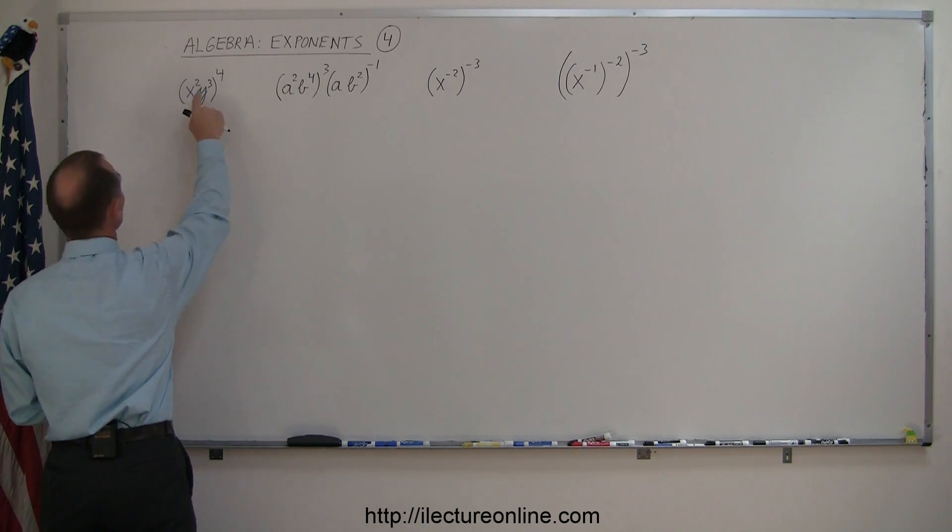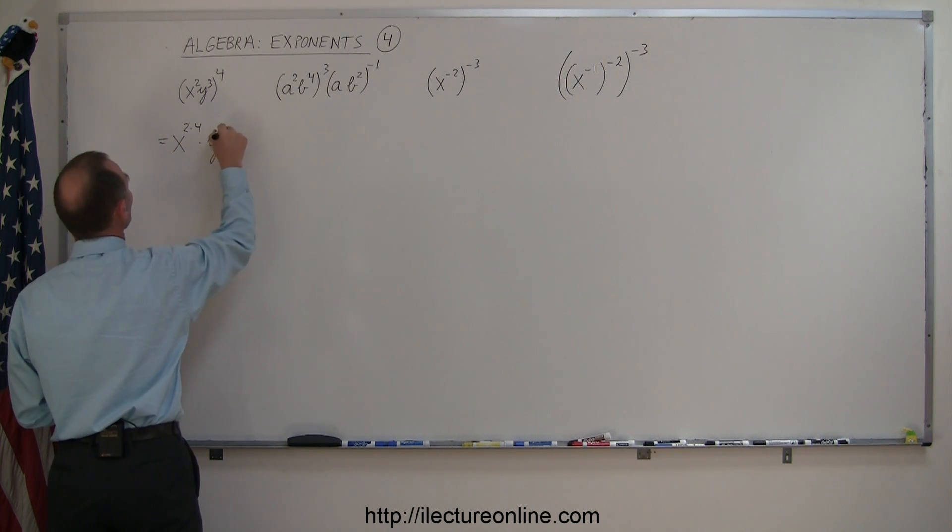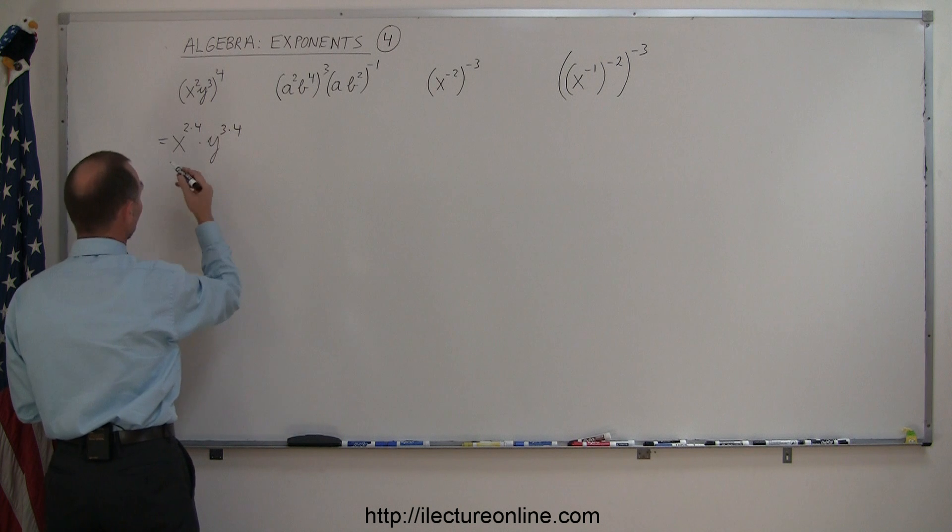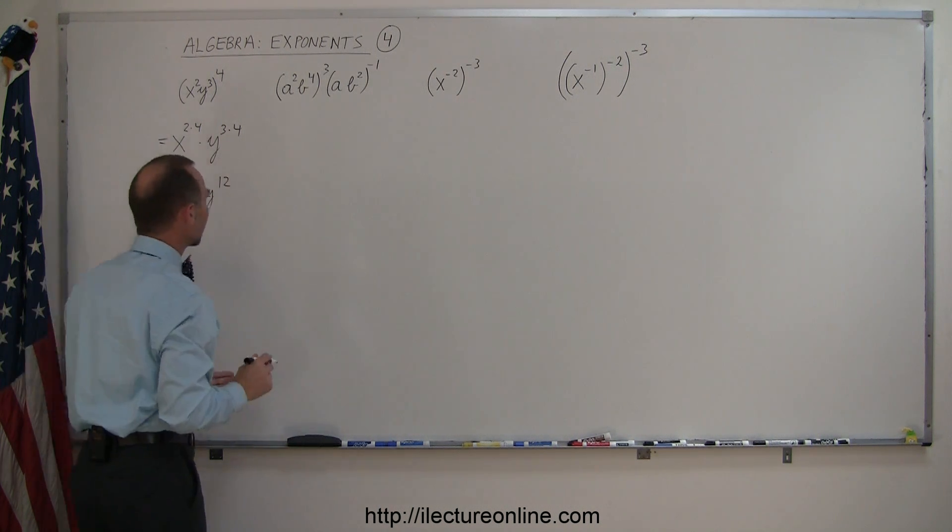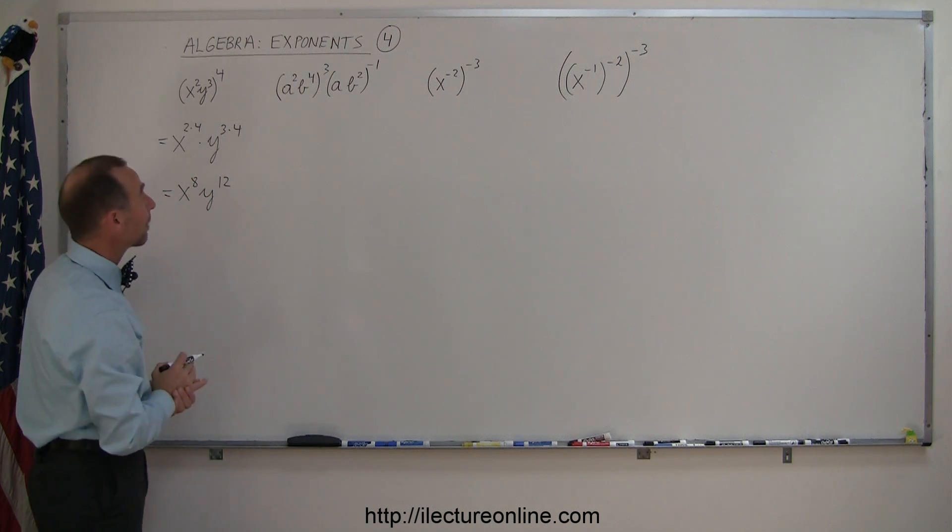So in the first case right here we're going to multiply the 2 and the 4 and we're going to multiply the 3 and the 4. So this is equal to x to the 2 times 4 power times y to the 3 times 4 power. And then of course we multiply, we get x to the 8 times y to the 12. That's how you do that.